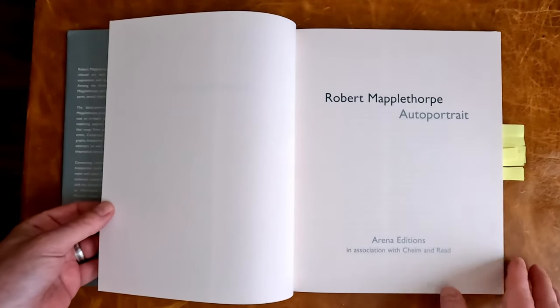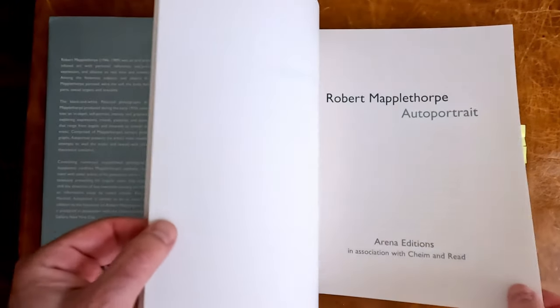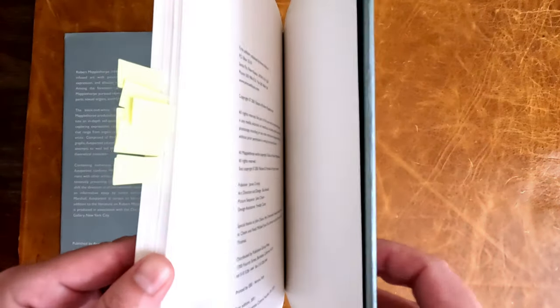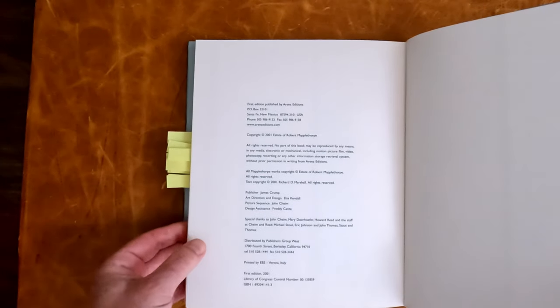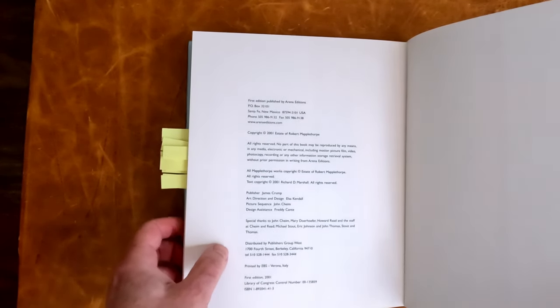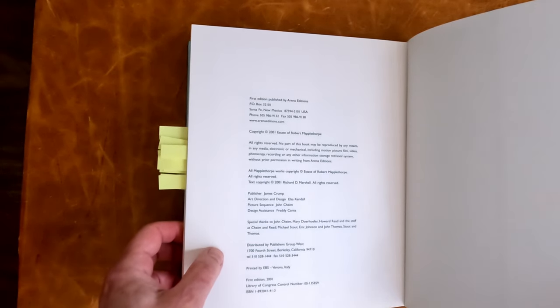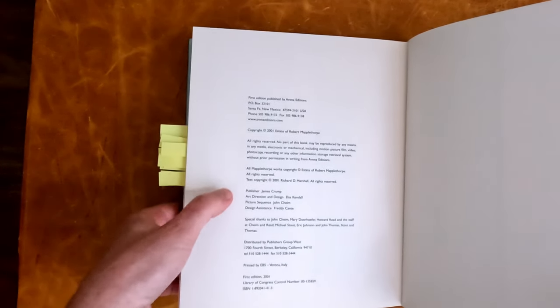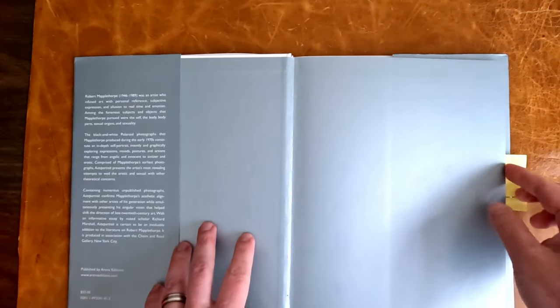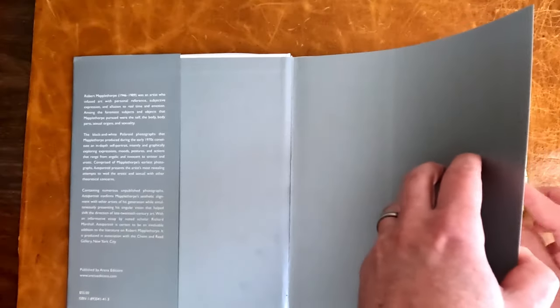But let's look at what we can of this book. This is the Irwina Editions and like with most art books the publication information is in the back. So this is 2001 first edition, printed in Italy by Irwina Editions and it has the estate of Robert Mapplethorpe's blessing I guess.